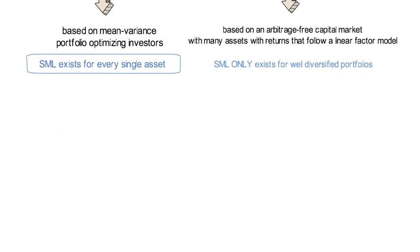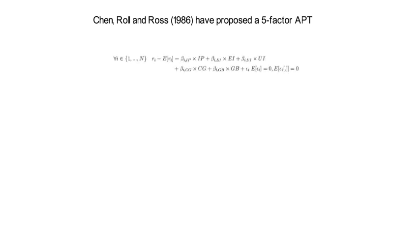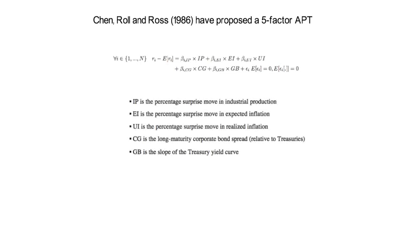Chen, Roll, and Ross in 1986 proposed a five-factor APT that gained traction in the literature. The factors are: IP — the percentage surprise move in industrial production; EI — the percentage surprise move in expected inflation; UI — the percentage surprise move in realized inflation; CG — the long-maturity corporate bond spread relative to treasuries; and GB — the slope of the treasury yield curve. Later in the course, we will discuss the Fama-MacBeth approach for estimating such factor premiums.